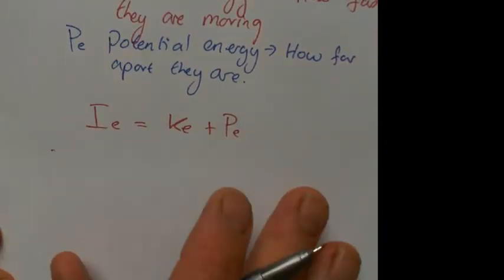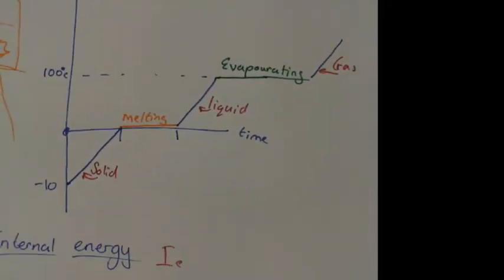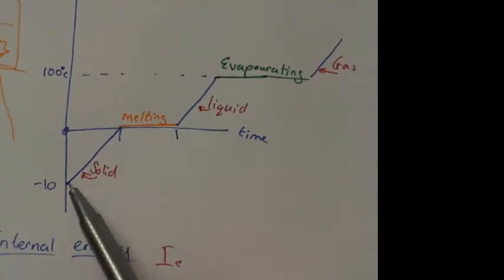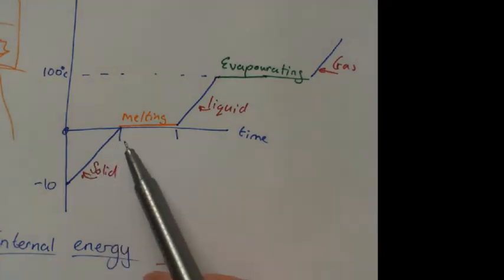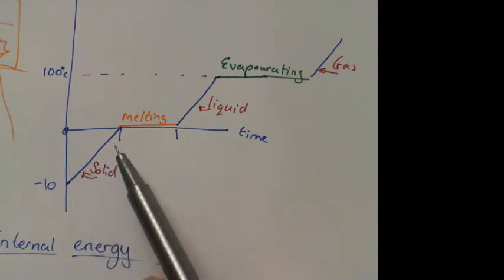So if we look at the graph again of change of state, what we can see is, we can see that here, the kinetic energy of the particles is increasing. So their internal energy is increasing because their kinetic energy is increasing.